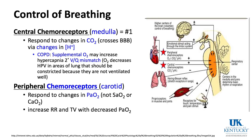Peripheral chemoreceptors are in the carotid body and respond to the partial pressure of oxygen — the tension, PaO2 — not the saturation or content. When PaO2 falls, respiratory rate and tidal volume increase. So the carotid body responds to PaO2, and the brainstem central chemoreceptors respond to CO2, as shown in the graphic.